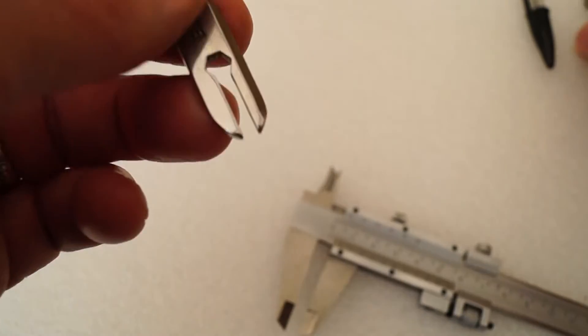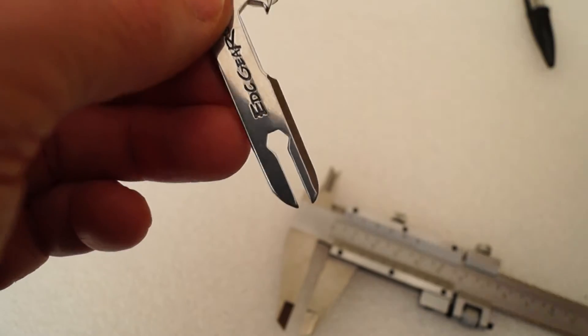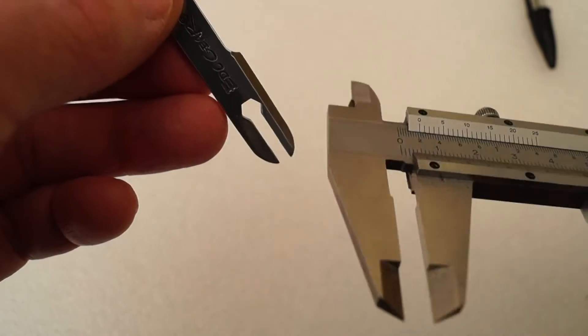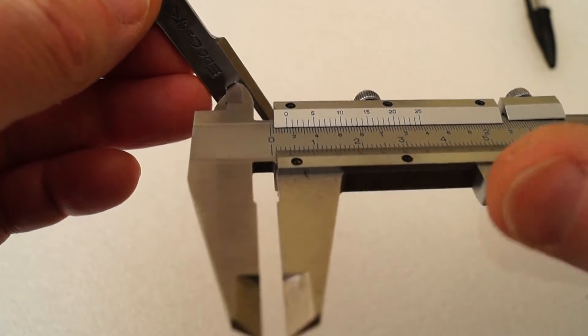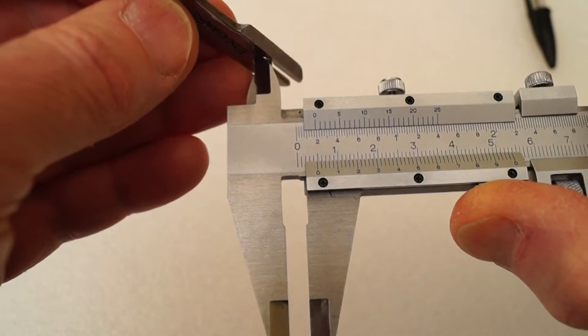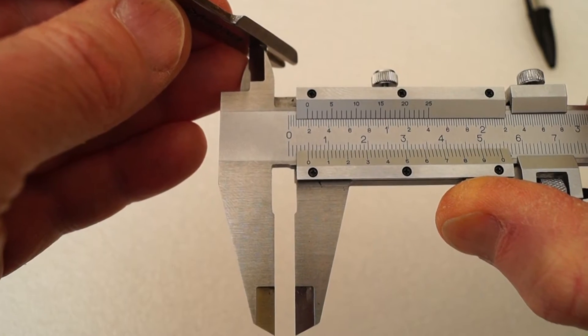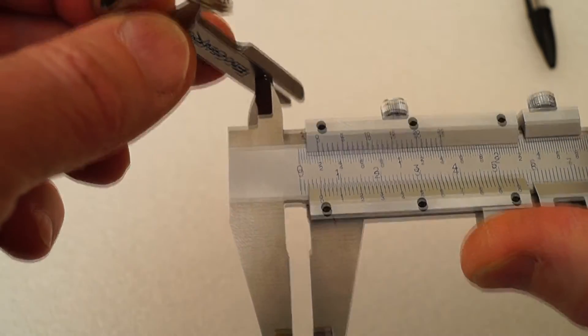And this one here is supposed to be 4mm. Get the caliper in there. And we're looking at 4.9mm. Not particularly very accurate then.